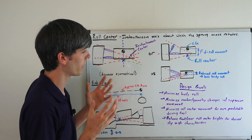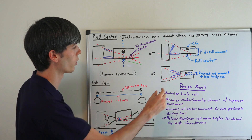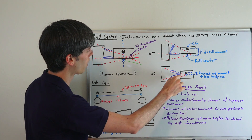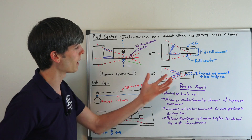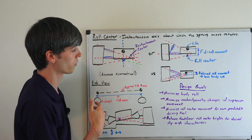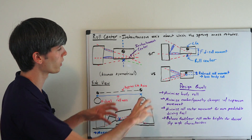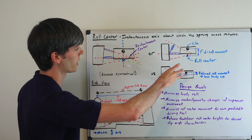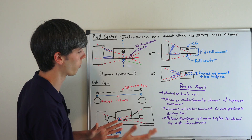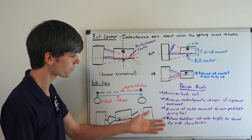You also want to minimize the camber and geometry changes with suspension movement. Tilting that lower control arm up a bit may resist the amount of roll you get, but on the other hand it may increase the amount of camber change, so it may end up having a negative influence overall depending on the driving conditions you're in.